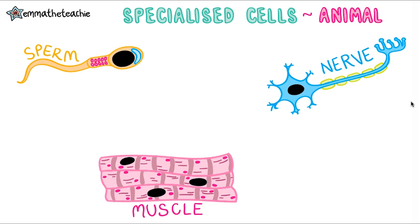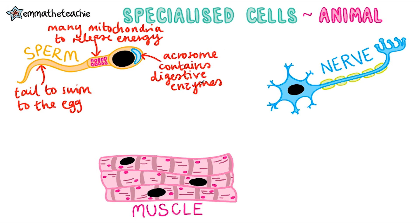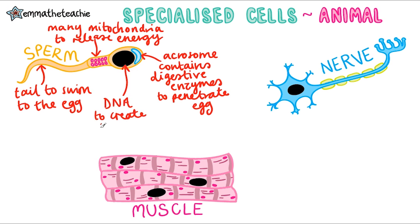First up, we've got a sperm cell and its function is to reach and fertilize an egg cell. Can you spot any structures that would help it do this? Well, first up, we've got a tail that helps it swim or move through the reproductive system to the egg. Then its midpiece has got many mitochondria to release energy for the movement of the tail. Up here in the head, we've got what we call an acrosome, which contains digestive enzymes to break down the egg and allow the sperm cell to penetrate it. And of course, we need a large nucleus to contain DNA, which can then be passed on to create offspring.